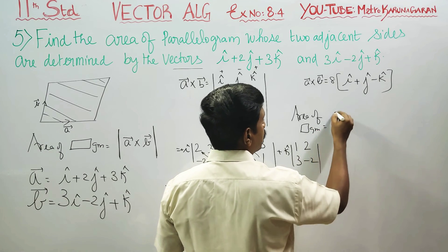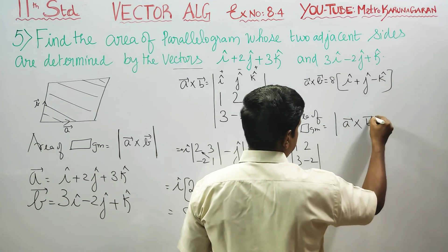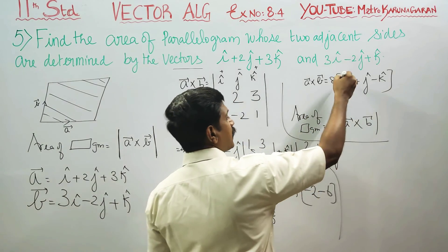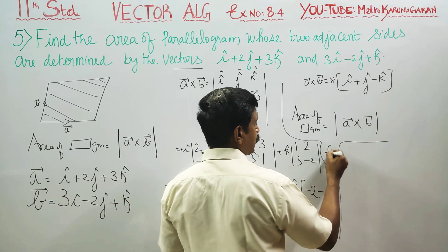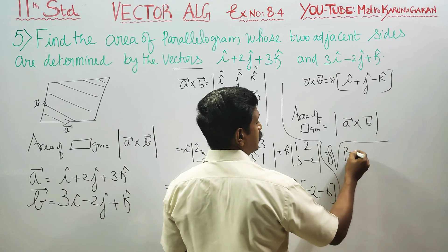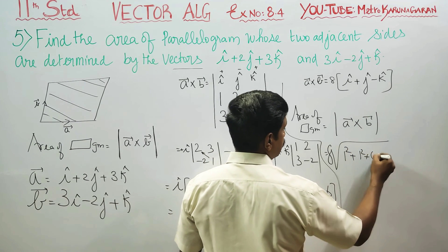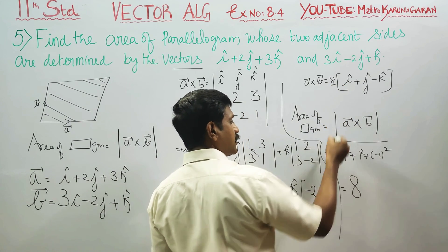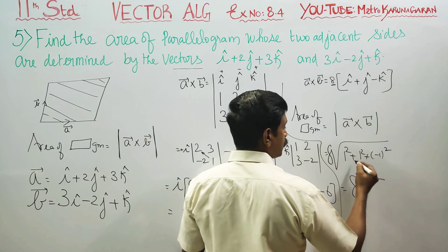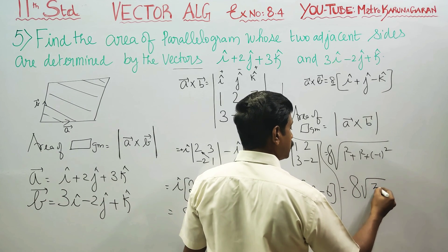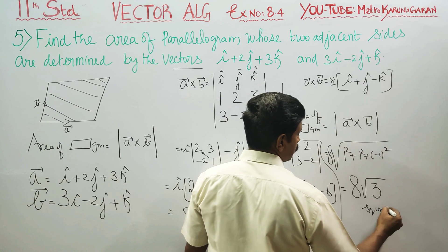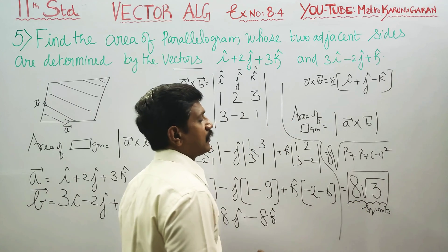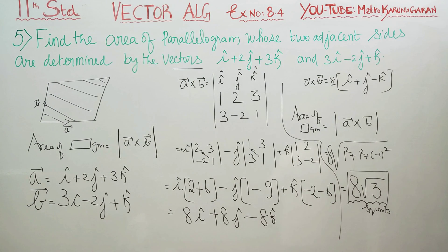The formula is the magnitude of A cross B, which is the square root of A cross B squared. Since 8 is already factored out, we compute 8 times square root of 1 squared plus 1 squared plus 1 squared, which equals 8 root 3 square units. This will be the area of the parallelogram: 8 root 3. Thank you.